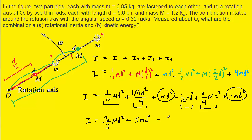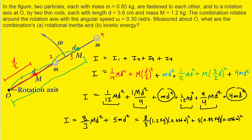At this point, we can plug in the known values for uppercase M, lowercase m, and d as given in the question. Don't forget to convert centimeters into meters by moving the decimal two places to the left. When you carefully type that into your calculator, you should get about 0.023 kilogram meters squared. This is the correct answer to Part A.